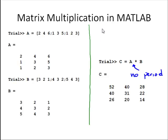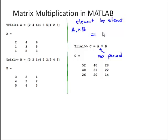So just to review, for element-by-element, A dot times B, that would be equal to the result would be 2 times 3 is 6, 4 times 2 is 8, 6 times 1 is 6, 1 times 4 is 4, 3 times 3 is 9, 5 times 2 is 10, 1 times 5 is 5, 2 times 4 is 8, and 3 times 3 is 9. Okay, so that's element-by-element, and recall that in this case, A and B must be the same size.